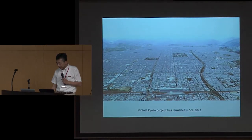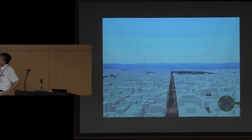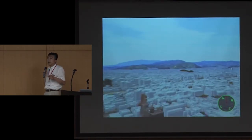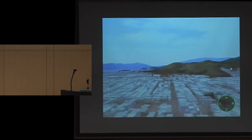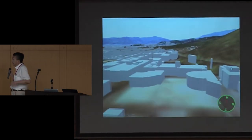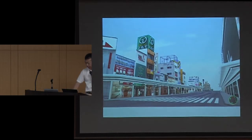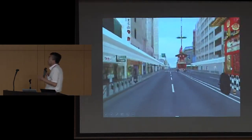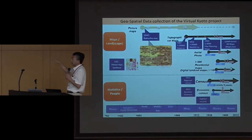This is our Virtual Kyoto for the present. We use LiDAR data for creating the 3D building model — back in 2002, before Google Earth. There are almost 400,000 buildings in Kyoto. Here you can see the university here. In some cases, we created a very detailed 3D building model like this one. We have already put all that data into the computer.